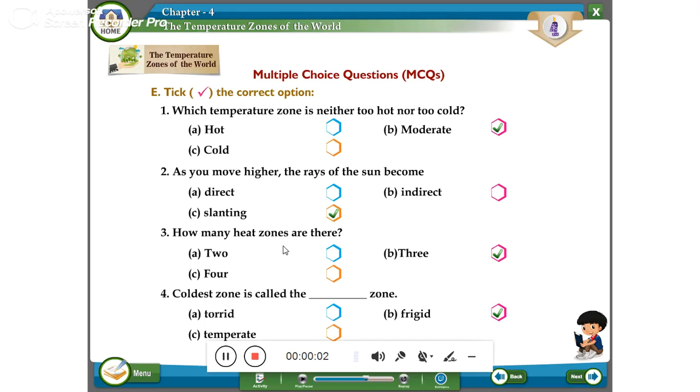Next one, multiple choice questions. So first one, which temperature zone is neither too hot nor too cold? A. Hot. B. Moderate. C. Cold.